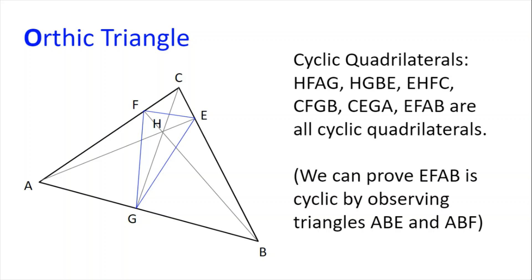There are lots of cyclic quadrilaterals in this diagram. HFAG, HGBE, EHFC, CFGB, CEGA, EFAB are all cyclic quadrilaterals. We can show that HFAG is a cyclic quadrilateral by looking at the angles AGH and AFH. They are both 90 degrees, and so the sum of the opposite angles in this quadrilateral is 180, which means that it is a cyclic quadrilateral.